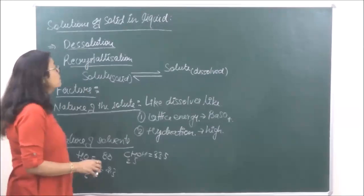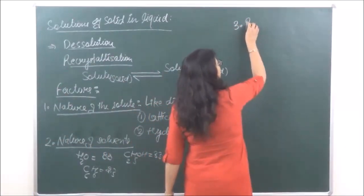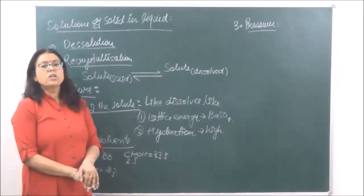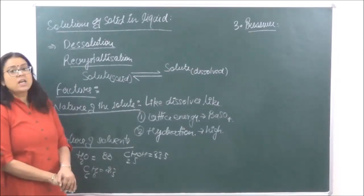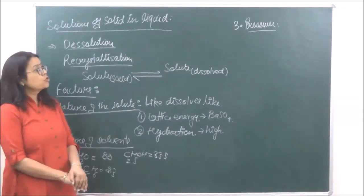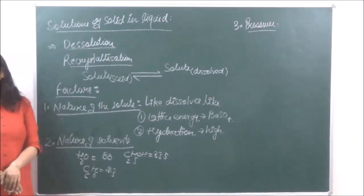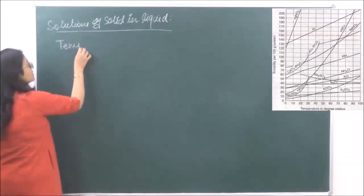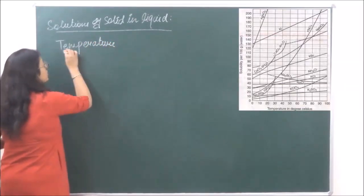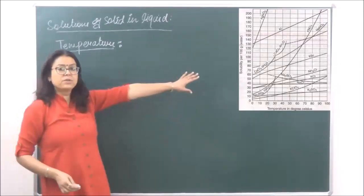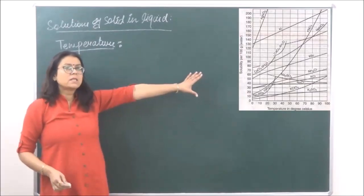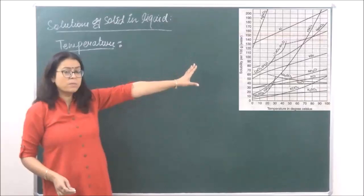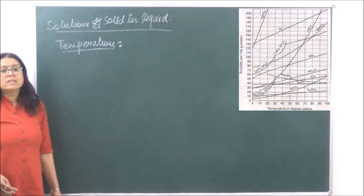The third factor is pressure. Solids are incompressible — we cannot deform solids by applying pressure — therefore pressure does not have much effect on the dissolution of solids in liquids. The next factor is temperature, which is very important. To study the effect of temperature, we have a graph on the board showing the effect of temperature on the solubility of various solutes. This is also known as the solubility graph of various solids.